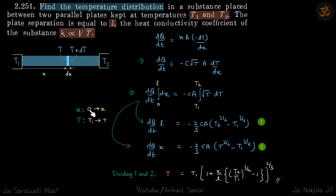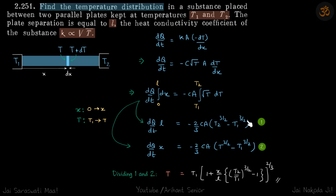When we put the limits of x from 0 to x and temperature from T1 to T, we get this equation — in the same equation we are just changing the limits. We need temperature as a function of x, so we use this second equation, replacing dQ/dt from the first equation, and we get our answer. The approach is similar to 2.249.